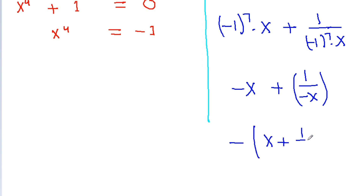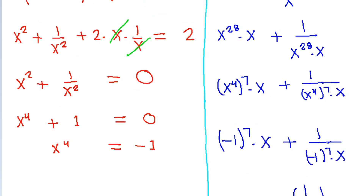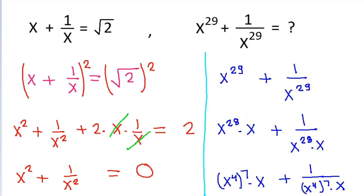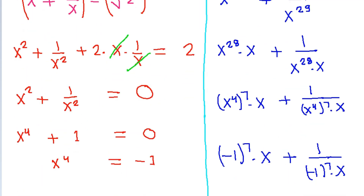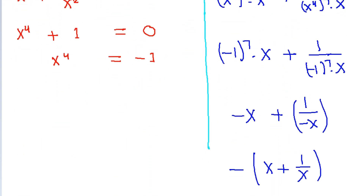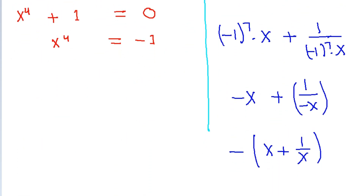We have given that x minus 1 by x is equal to square root of 2, so we get minus root 2, and it is the required answer.